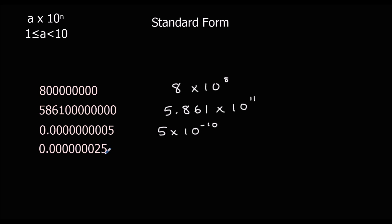This number will have 2.5 between 1 and 10. Again, it's going to be a negative power because we're dividing, going back 1, 2, 3, 4, 5, 6, 7, 8 times. So it's 2.5 times 10 to the power of minus 8.